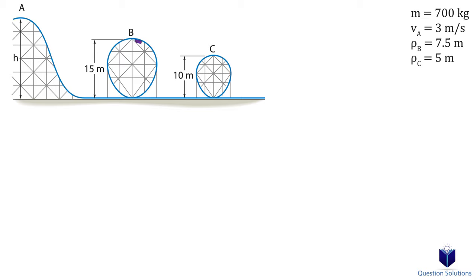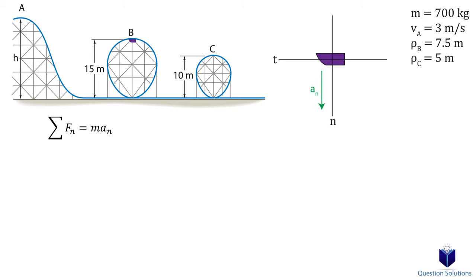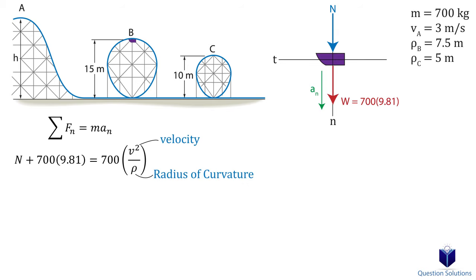We need to consider normal acceleration in this problem since the car will travel through loops, so we can write an equation of motion for the normal axis. Let's draw a free body diagram when the car is at point B. We have the car upside down with the tangential and normal axes. The normal acceleration points straight down towards the center of the curve. We also have weight and the normal force. Normal acceleration is velocity squared divided by the radius of curvature. Now, let's assume that at this instant the car is just about to fall down, meaning the normal force is zero.